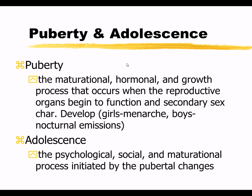Puberty is the maturational, hormonal, and growth process that occurs when the reproductive organs begin to function and secondary sex characteristics develop. In girls it's marked by menarche; in boys by nocturnal emissions. Adolescence is the physiological, social, and maturational process initiated by pubertal changes. There are three sub-phases: early adolescence 11 to 14, middle adolescence 15 to 17, and late adolescence 18 to 19. Please realize there is a wide range of normal for an adolescent.